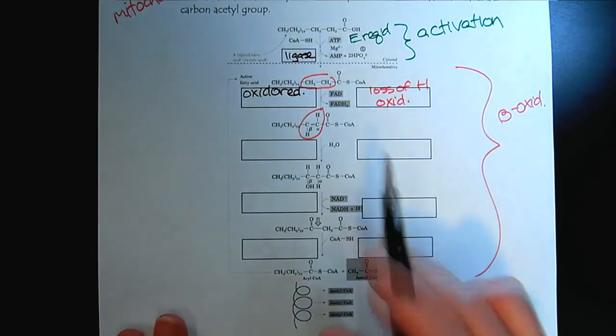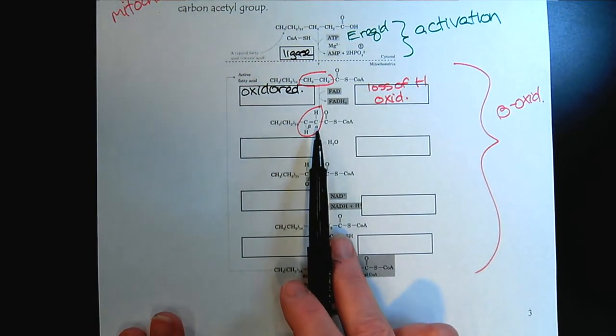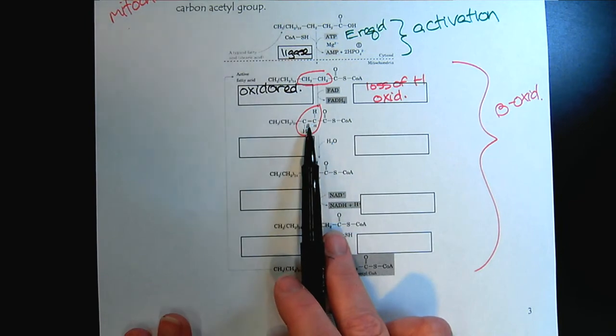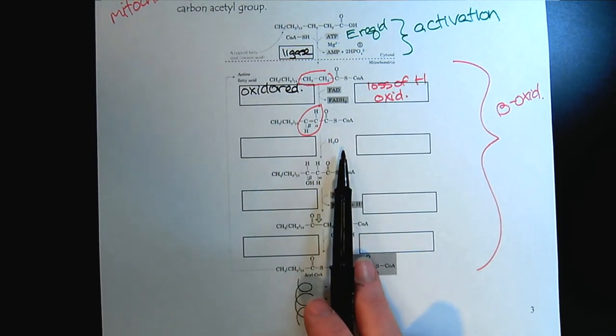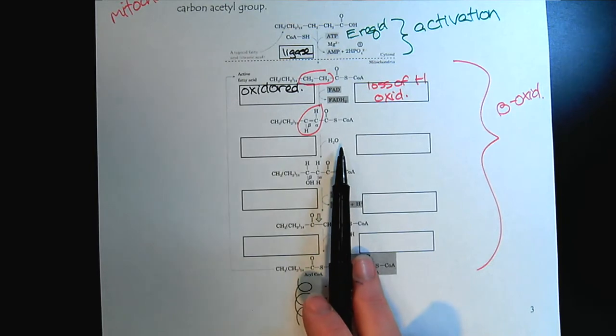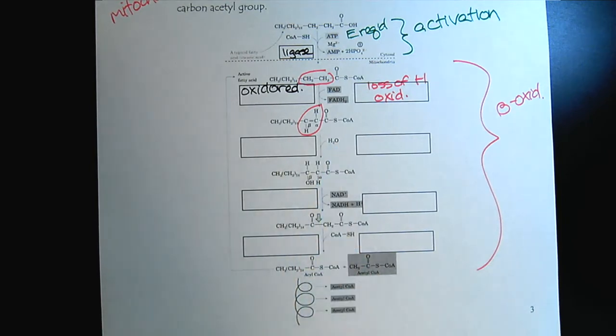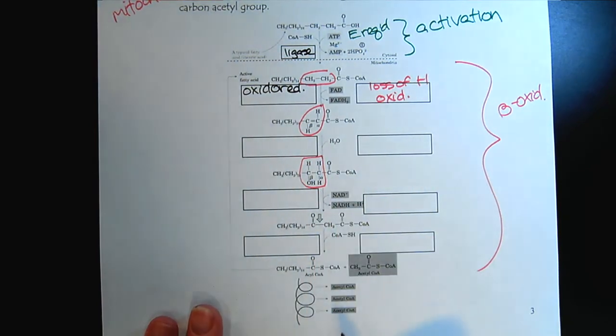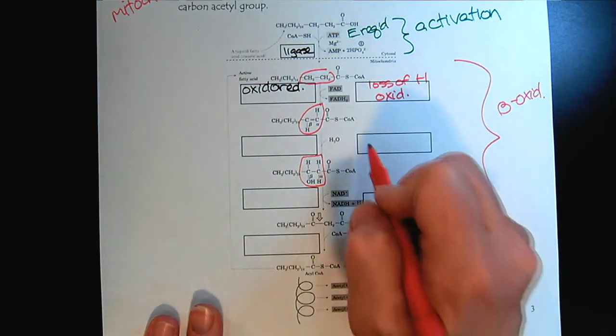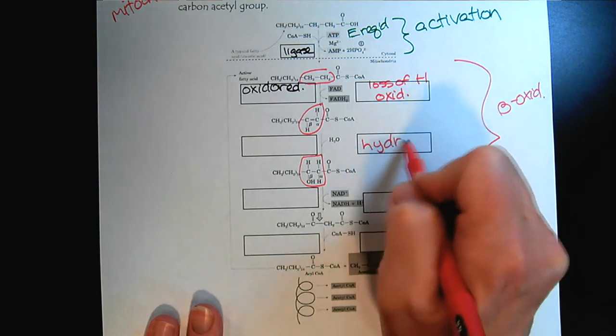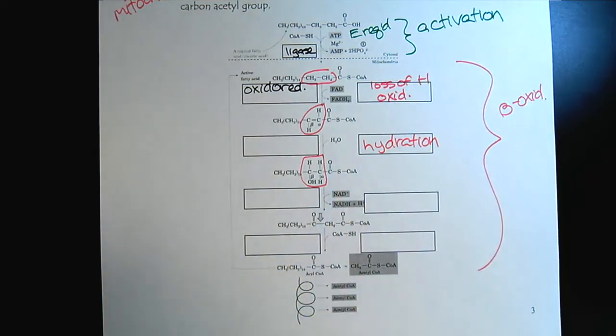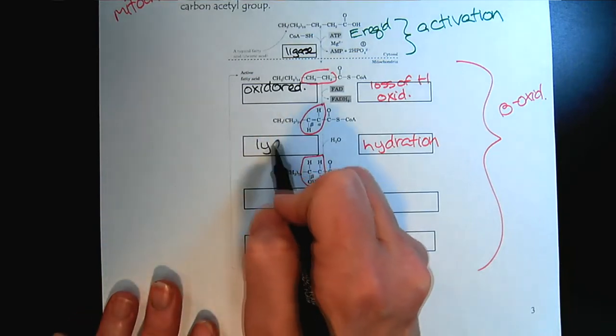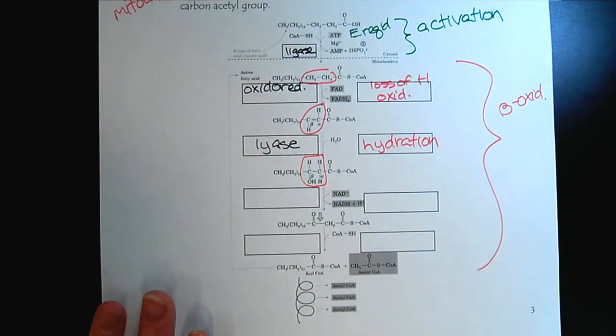Now let's look at the next step. We formed a double bond by oxidizing these two carbons. And now we bring in water. And what does the water do? The water now adds across the double bond. So we would describe that as a hydration reaction. And so the type of enzyme we would need here would be the lyase.